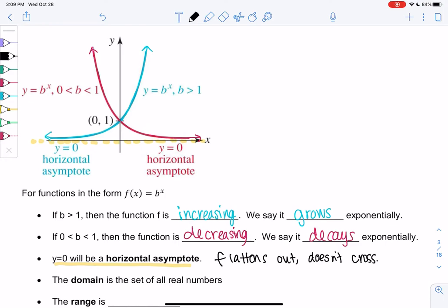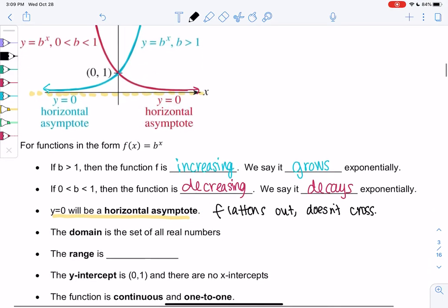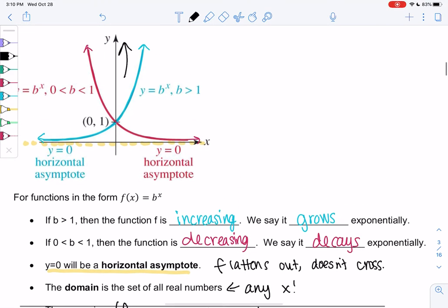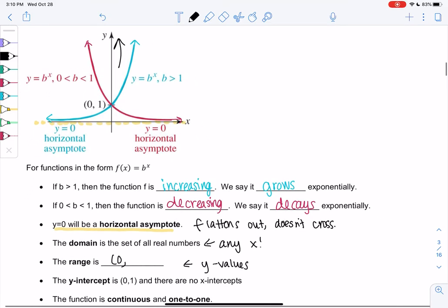The domain is all real numbers, which means we can plug in anything for x, but the range is different, the y values. So looking visually, they're never equal to 0 and they're never negative, so my lower will be 0 and they just go up to infinity. So 0 to infinity will be my range.